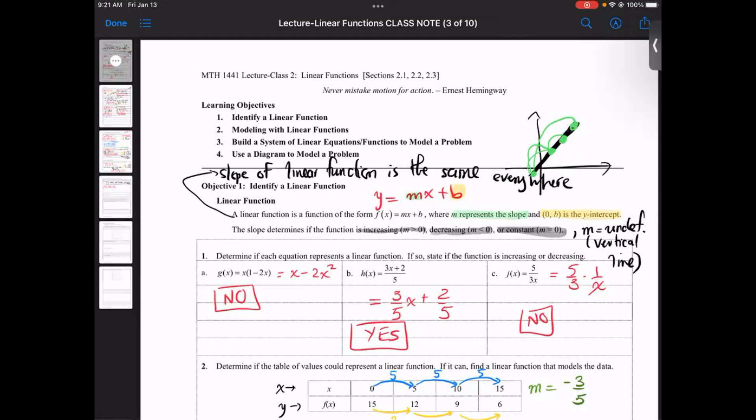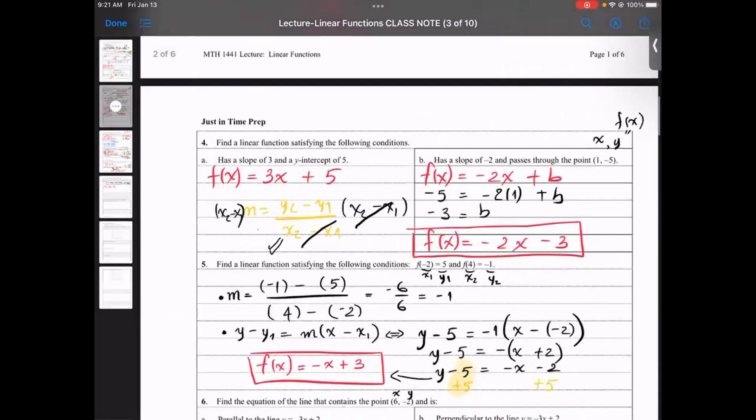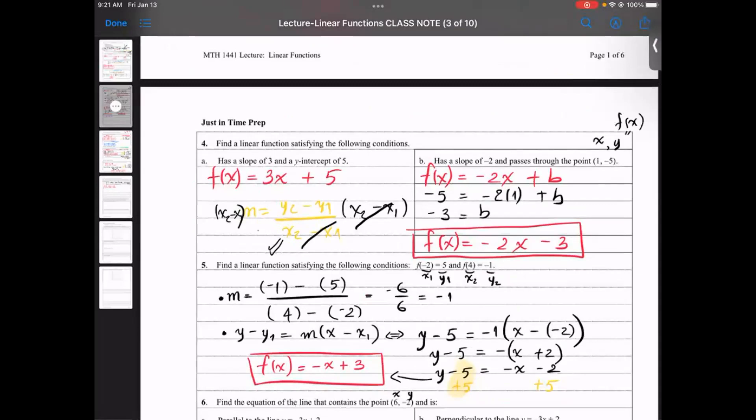But we learned how to construct a linear function given information, right? There's many ways I can give you information. I can give you two points like this. I can give you a slope and then it's passing through a random point, or I can just give you a slope and an intercept, that would be the easiest case, right. But on the exam, probably gonna see something more like these two. That's too easy.